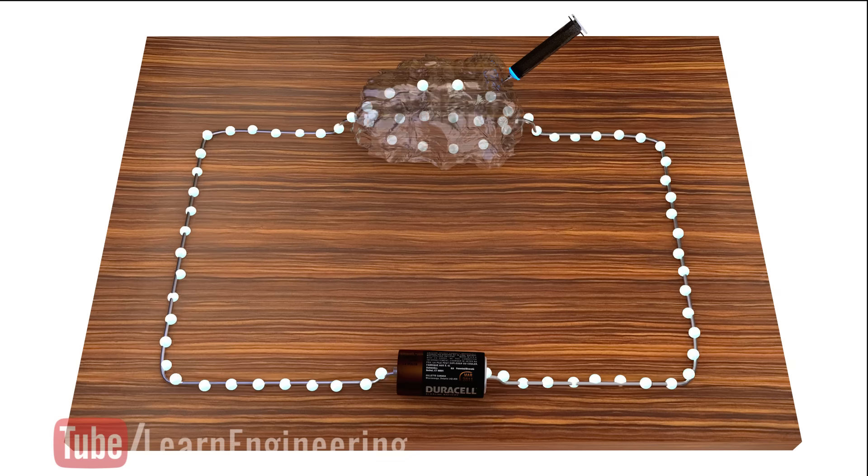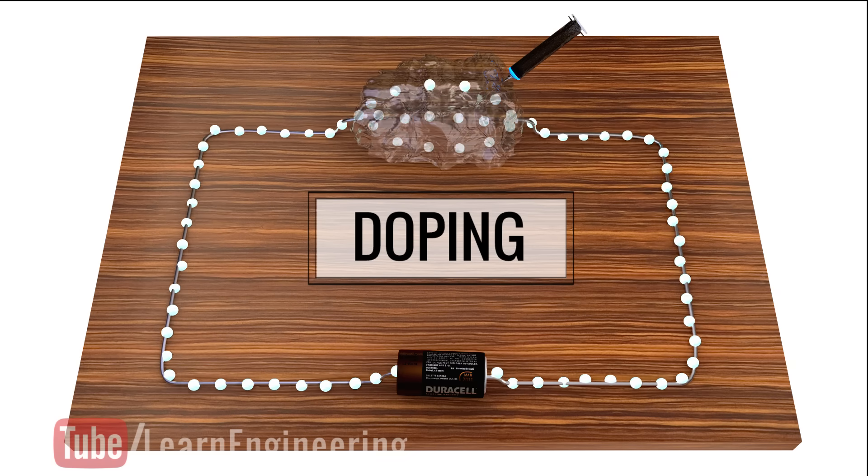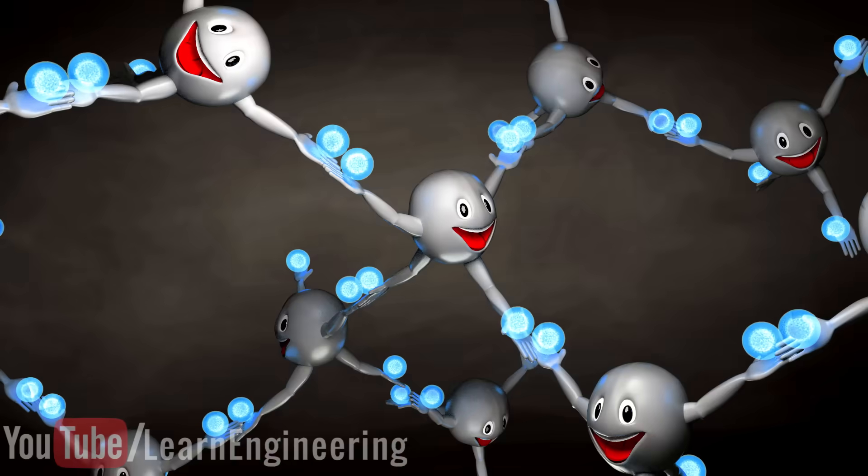This procedure of adding impurities is called doping. To understand the physics of doping, let's first understand the internal structure of silicon and also that of the impurity known as a dopant.